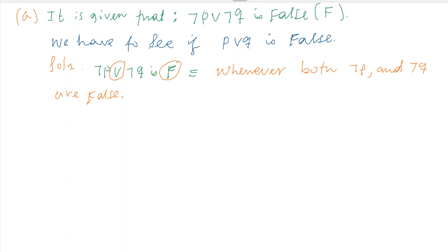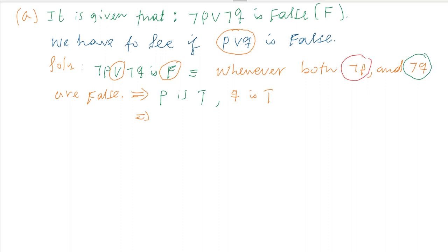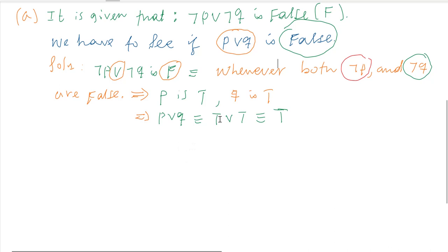This is direct from the rule of disjunction. So if negation of P is false, then P is true. And if negation of Q is false, then Q is true. So both P and Q are true. Therefore P or Q is equivalent to true or true, which is true.